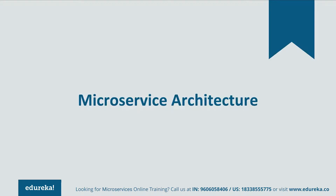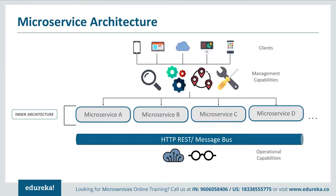Let's learn more about microservices by looking at different components of its architecture. The architecture starts with different clients from different devices trying to perform different management capabilities such as build, search, and notification. Each functionality is segregated into separate microservices handling their own data — for example, microservice A for search, microservice B for build, microservice C for notification. All these individual microservices have their own load balancing and execution environments, communicate with each other through REST or Message Bus, and client requests are passed to the internal architecture through an API Gateway.